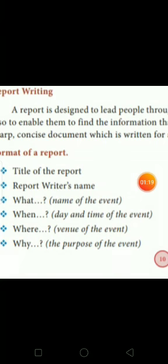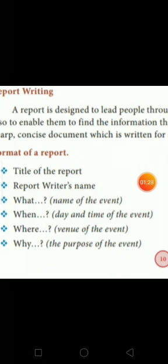First, the name of the event — whatever it may be, you have to give the title. What happened there? The name of the event has to be given. And then when? The day and time of the event — when the annual sports meet was held — has to be given. And the venue of the event, the place where the event was held, you have to mention that also. And why? The purpose of the event. These four questions have to be answered in a precise manner.